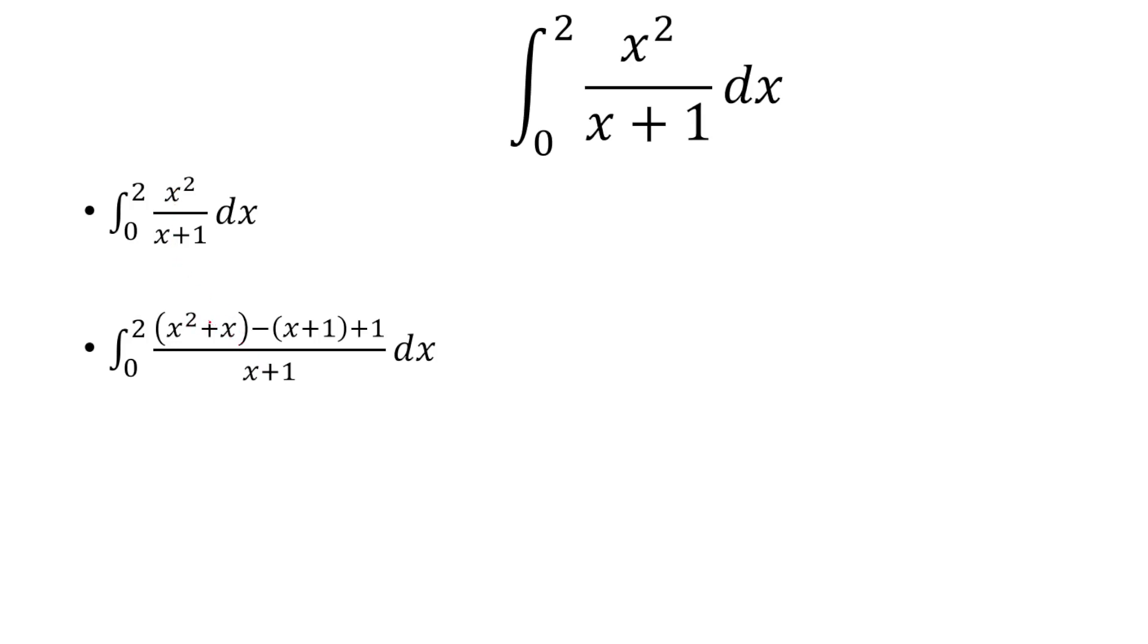So if I were to add x here, I also need to subtract by x. But now I need to cancel out this plus 1. How do you cancel out this plus 1? We do minus 1 and then plus 1 like this.